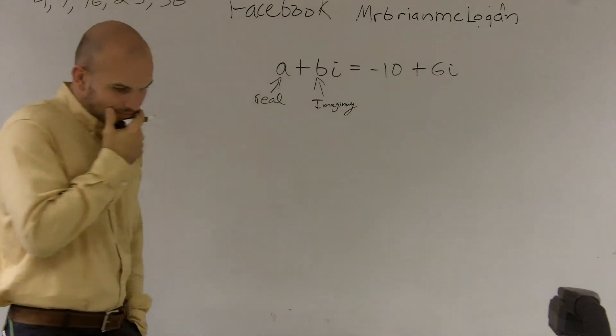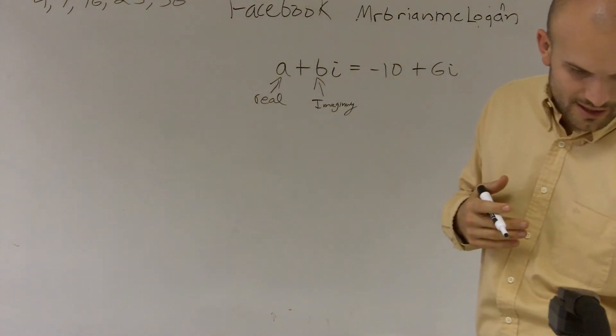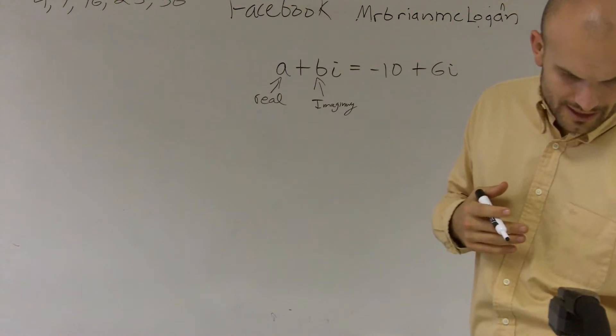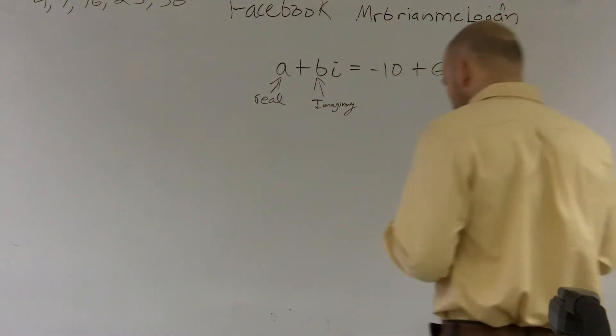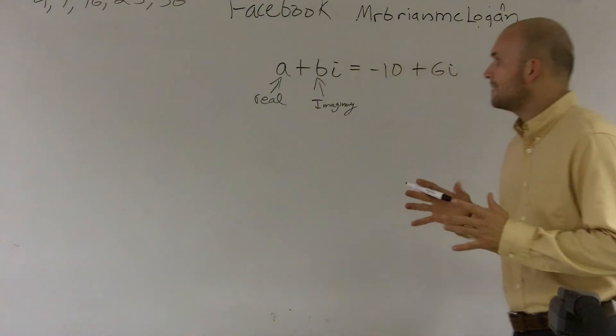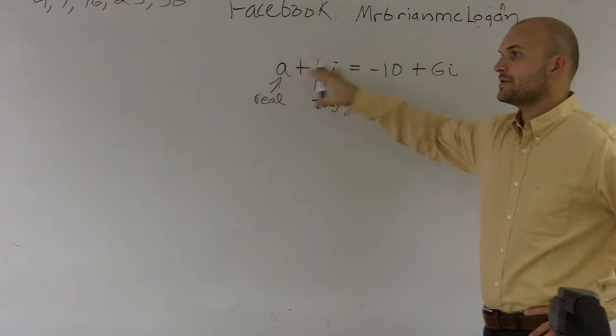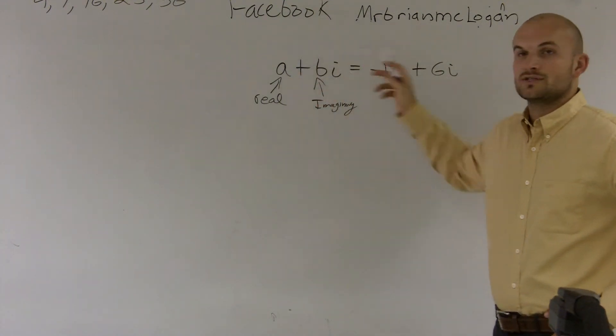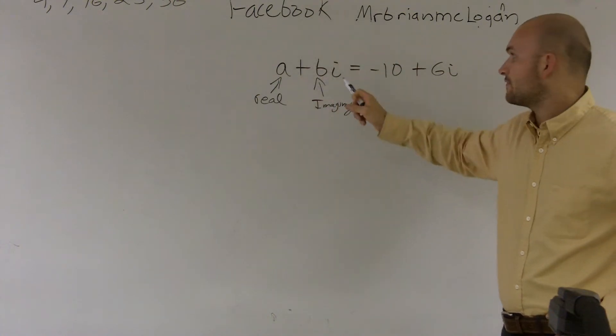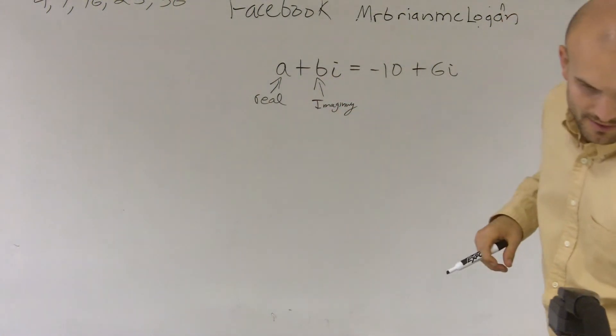All right, so one thing we talk about when we're talking about imaginary numbers is if you have an imaginary number equal to another imaginary number, then your reals must be equal to each other and therefore also your imaginary must be equal to each other.